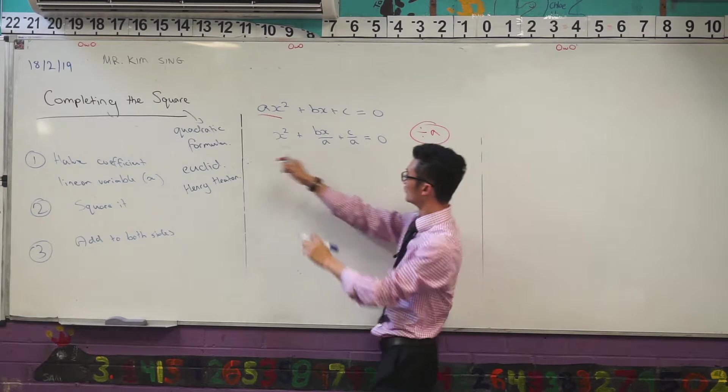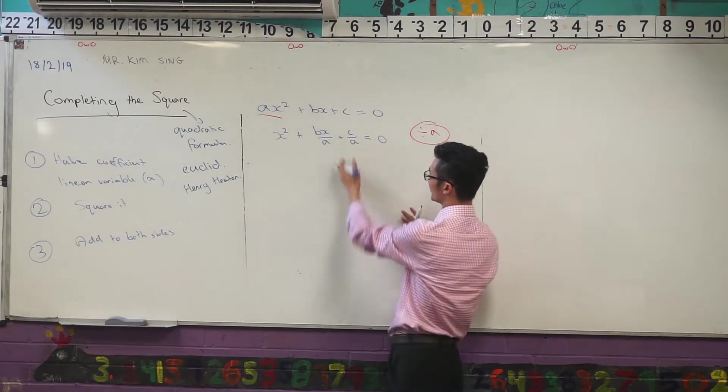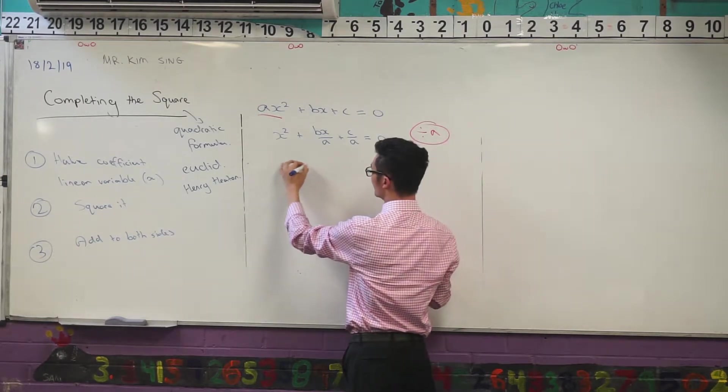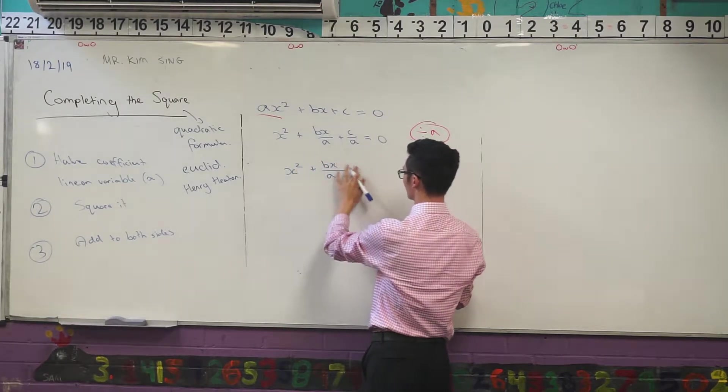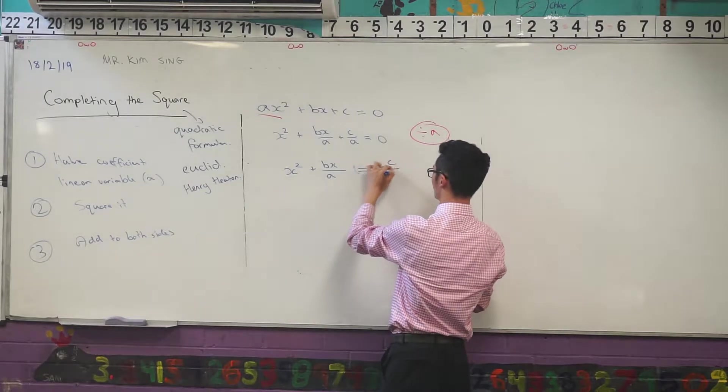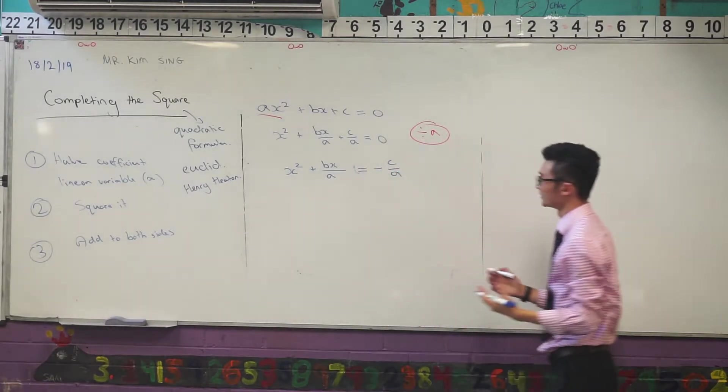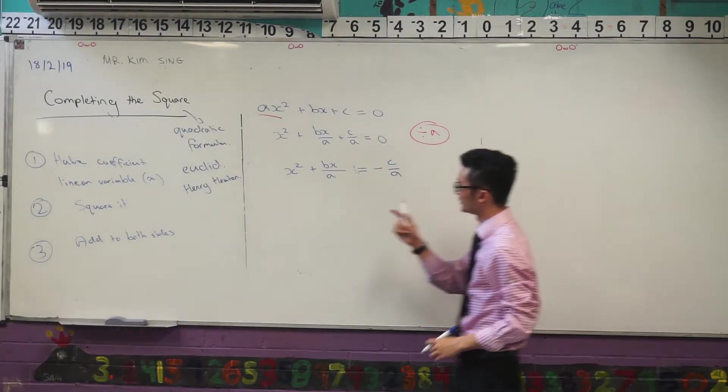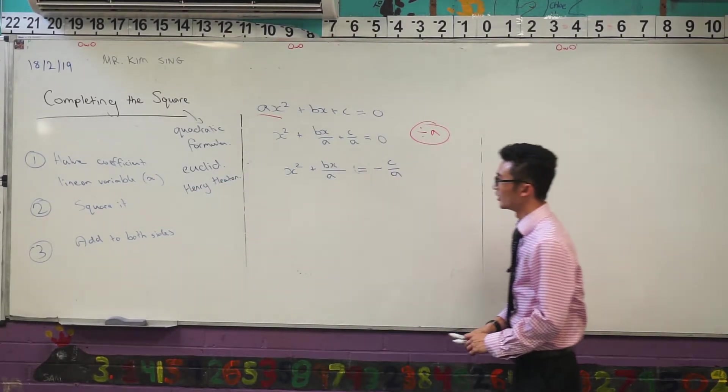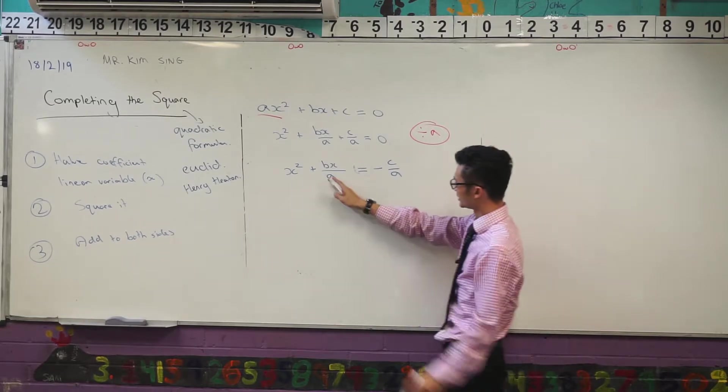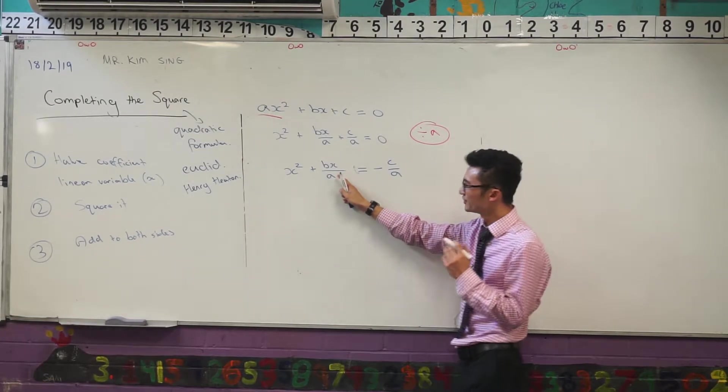Now again, using completing the square, I want to have that constant to the other side, so I'm just going to move that over as well. So subtract both sides by c on a. And now I want to think, here's the first step. I want to halve the coefficient of that linear variable x. So I'm looking at this expression, I'm trying to think, what's the coefficient here? The coefficient is the number or value in front of that x.